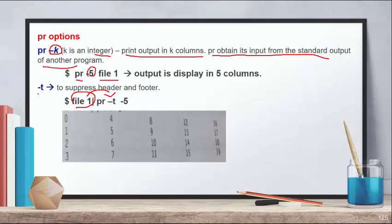Next is the minus T option. Normally when you use PR with a file name, it already adds a header and footer — some lines in the header and footer — as well as the page number, date and time, and file name in the header. But if you want to suppress this header and footer, you can use the minus T option.